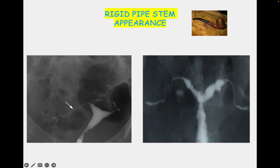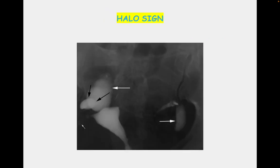Rigid pipe stem appearance is also seen in tuberculosis patients. The tubes appear like a pipe stem because peritubal adhesions restrict the normal motility of the tubes, giving the appearance of a rigid pipe stem.